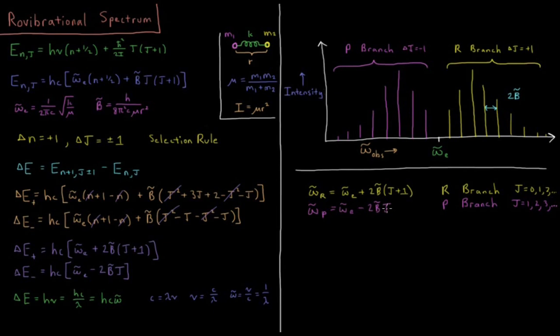This is our rovibrational spectrum. We get a P branch and an R branch. Each of those peaks is separated by 2 b bar just as they are in the microwave spectrum. But we get this different shape to the peak now because we have this vibrational transition plus whatever the energy of our rotational transition is from either going up one quantum in rotational quantum number or down one quantum in our rotational number.